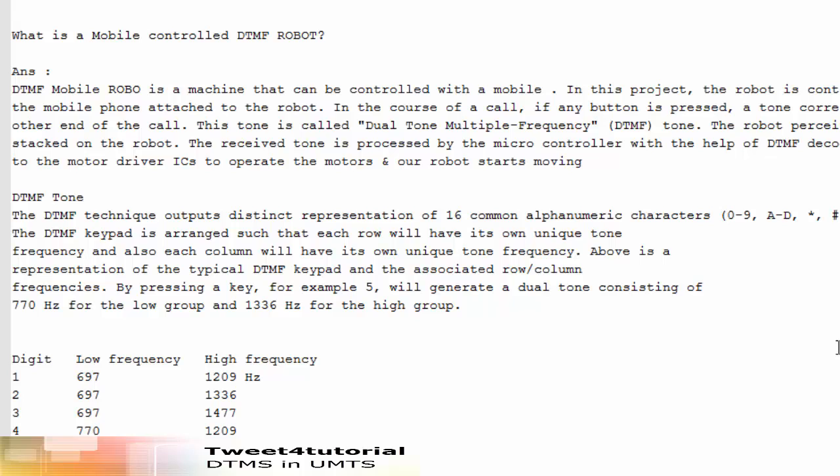A DTMF mobile robot is a machine that can be controlled with a mobile. In this setup, the robot is controlled by a mobile phone that makes a call to a mobile phone attached to the robot. During the call, if any button is pressed, a tone corresponding to the button press is heard at the other end. This tone is called Dual Tone Multiple Frequency — DTMF tone. The robot perceives this DTMF tone with the help of the phone stacked on the robot. The received tone is processed by a microcontroller with the help of a DTMF decoder, and the microcontroller then transmits the signal to the motor driver IC to operate the motors, and the robot starts moving.